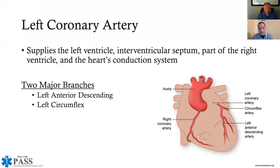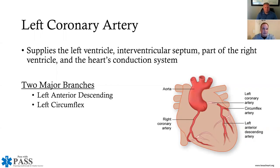Before jumping into 12-lead EKG interpretation, it's extremely important to understand coronary artery anatomy. The left and right coronary arteries come off the base of the aorta and are the two main arteries supplying the myocardium with oxygenated blood. They have several branches, but the left main and right main coronary arteries are the large primary suppliers.